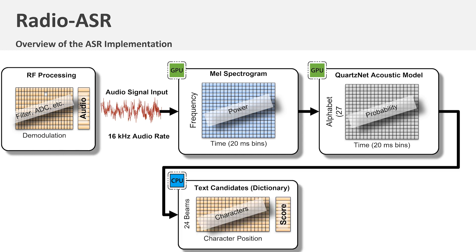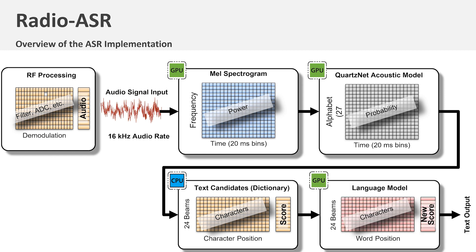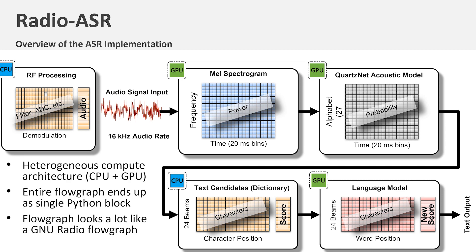The output of the QuartzNet model is provided to the language model, which will map from characters and words to sentences given the statistics of a known language.